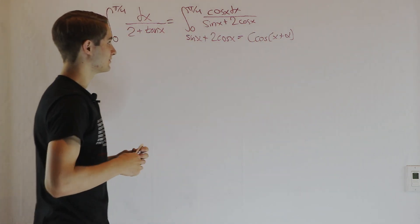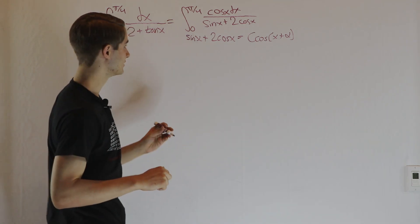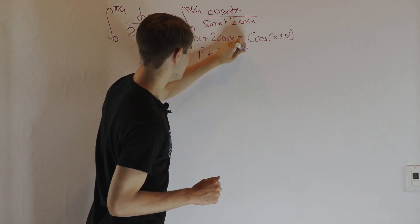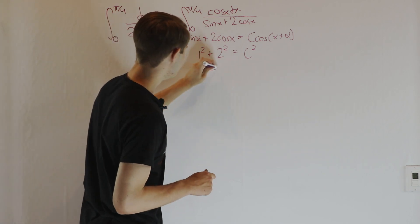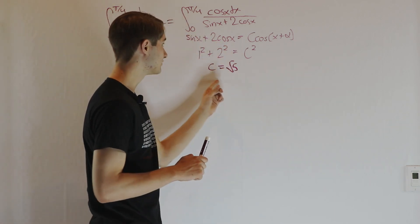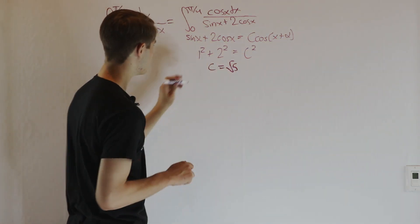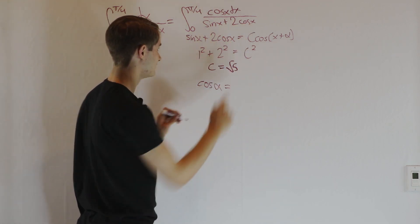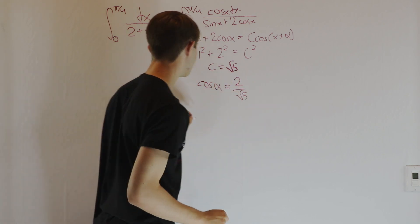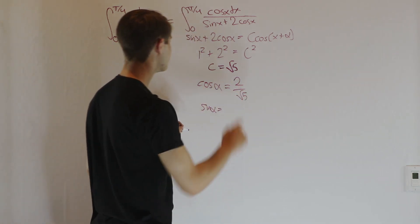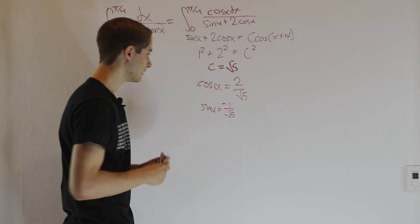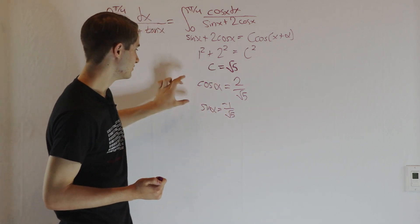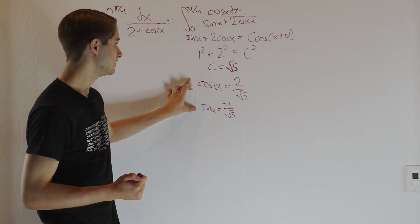Let's figure out c and α. The coefficient of sine is 1, so 1 squared plus 2 squared equals c squared, giving us c equals √5. For α, cosine α equals b over c, which is 2 over √5. And sine α is going to be negative 1 over √5. There isn't a way to solve for α explicitly without a calculator, so we'll just keep this information and use it later.